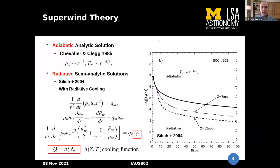These adiabatic assumptions, first used by Chevalier and Clegg, predict that wind speed decreases with radius, with density scaling as a power of minus two and temperature scaling as a power of minus four-thirds.